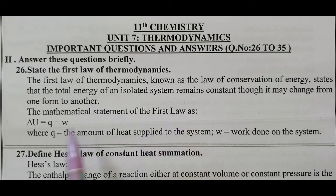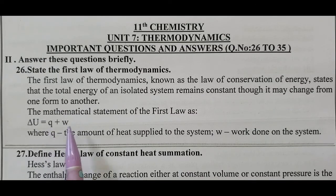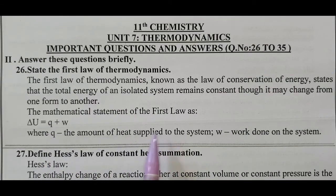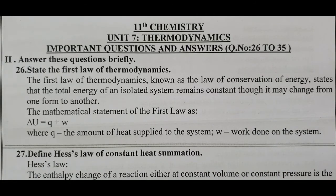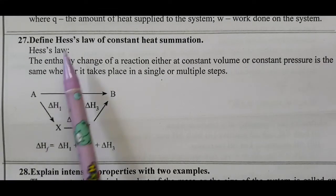The mathematical statement of the first law is: delta U (internal energy change) equals q plus w, where q is the quantity of heat and w is work. Q positive means heat is supplied to the system. W positive means work is done on the system. W negative means work is done by the system. That covers question number 26.